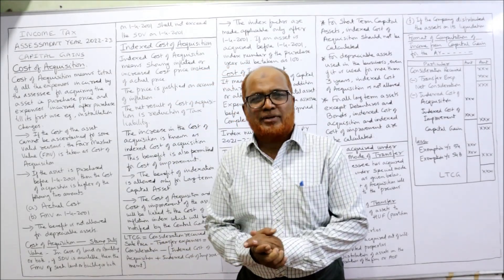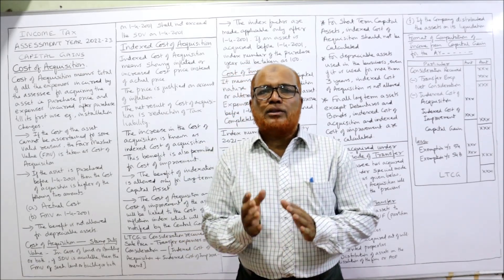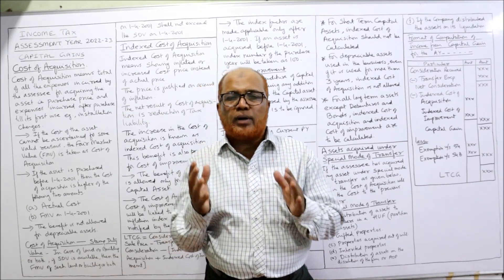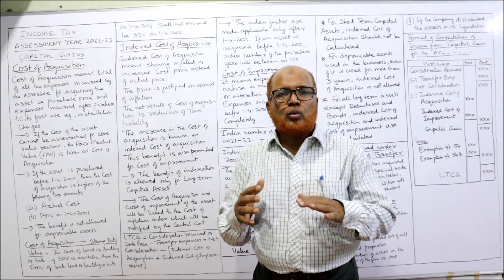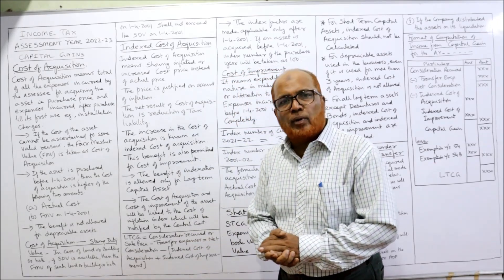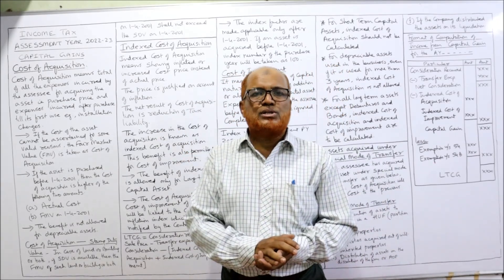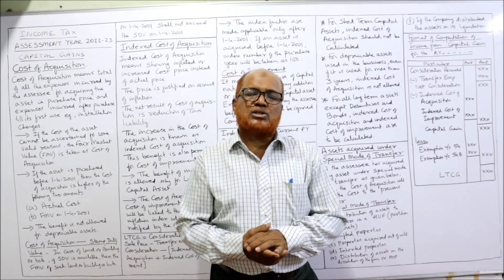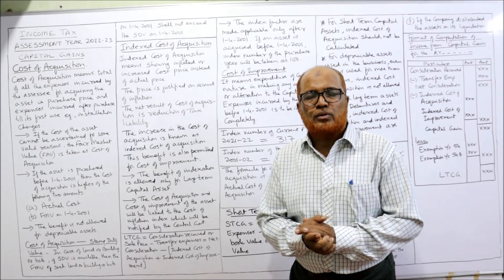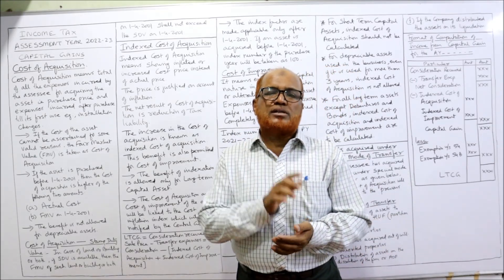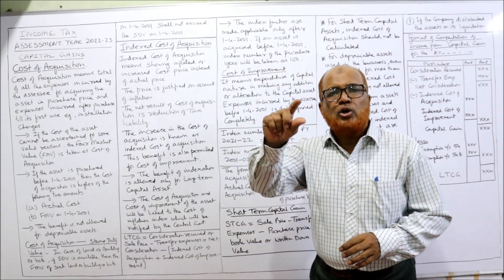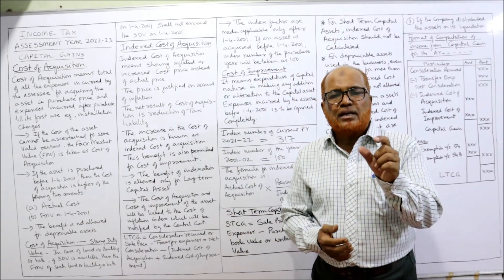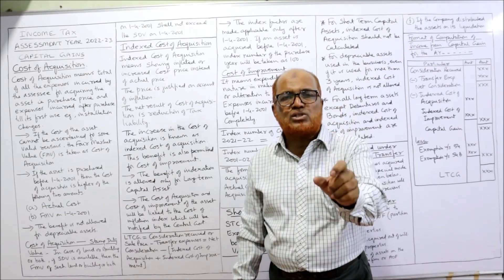Hello viewers, welcome to my channel. I'm Harsha Mali Khan. This is the last and final video on the theory of capital gain. In the last two videos I explained in detail regarding what is capital gain, the nature of capital gain, and how to compute income from capital gain. In this video I am going to explain about the cost of acquisition, indexed cost of acquisition, cost of improvement, and the special mode of transfer. This theory is very important for writing theory questions in examination — they will frequently ask what do you mean by indexed cost of acquisition and what are the special modes of transfer, because capital gain tax will be applied whenever there is a transfer of capital asset.